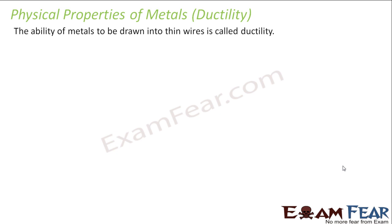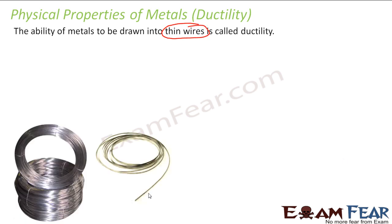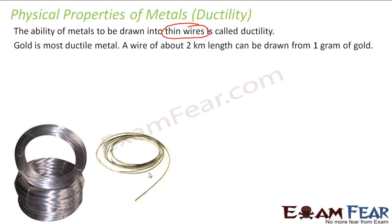Ductility is nothing but the ability to draw the metal into thin wires. You have this metal and then convert it into small, thin wires — that is called ductility. Please note, malleability and ductility are different: malleability means you convert the metal into thin sheets, while ductility means you convert them into thin wires. Gold is the most ductile metal — you can make two kilometers of wire from just one gram of gold. But still, we don't use gold to create wires because it is very costly, so we use copper.